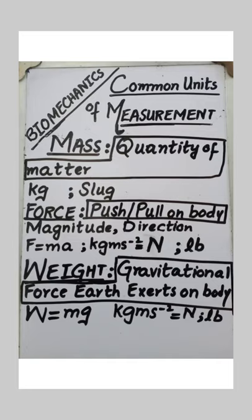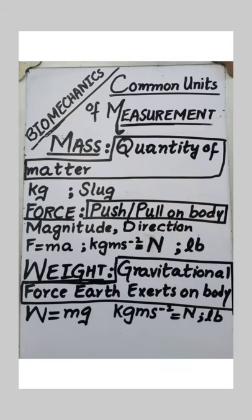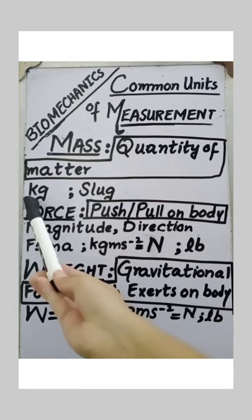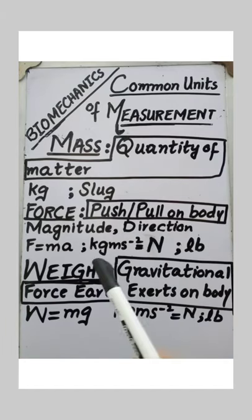Number one is mass. What is mass? Quantity of matter is known as mass. The unit of mass is kilogram, abbreviated as kg. The English or British unit is slug, but the common unit is kg or kilogram.